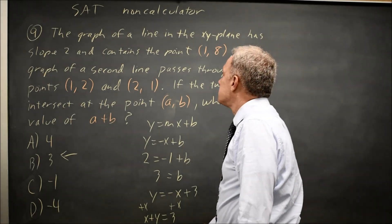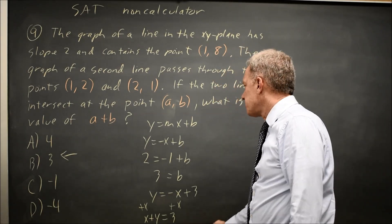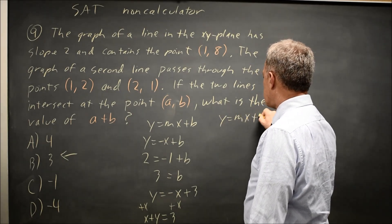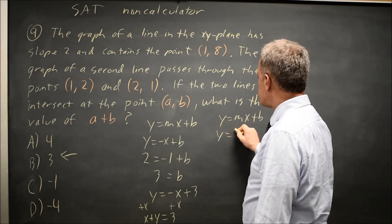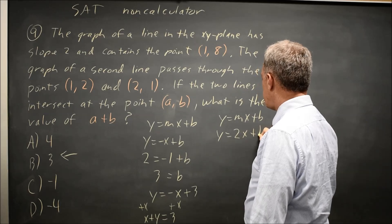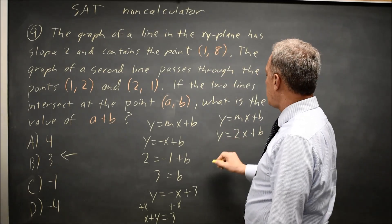My second equation is, again, y equals mx plus b. We're told that m is 2, so y equals 2x plus b. Finding b with the point (1,8).